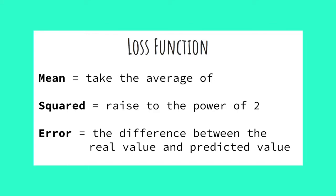First, think about the name, mean squared error. It is exactly what it says it is. Mean is to take the average of, square is to raise to the power of 2, error is the difference between the actual value and the predicted value.